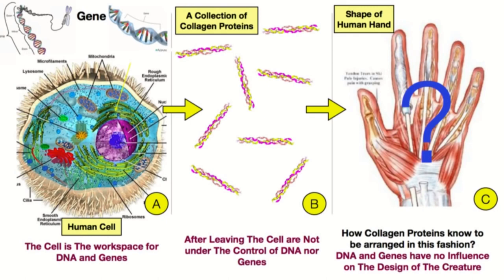So the main conclusion is that genes and DNA do not contain the shape or formation of a creature, and thus they cannot pass on this information from one generation to another. If changes occur in one generation, DNA and genes cannot pass on this information. This shows that the basis of evolution is wrong, and thus there is no theory of evolution. May the peace and blessings of Allah, God Almighty, be upon you all.